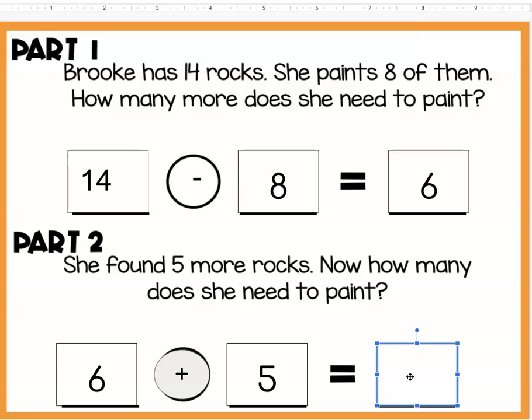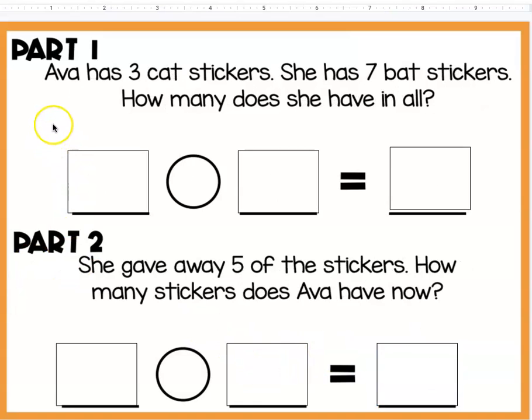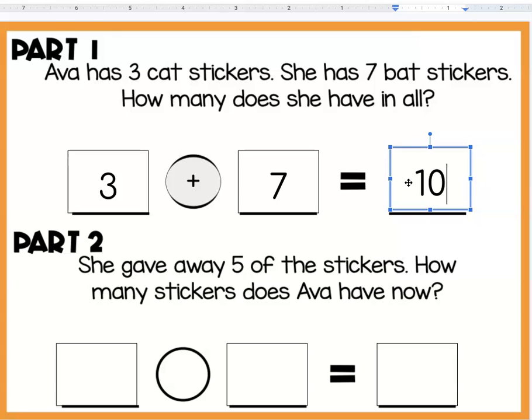Let's do one more. Ava has three cat stickers, so I'm starting with three. She has seven bat stickers. How many does she have in all? They're asking for all the stickers together. When you're combining, you're adding. So put the addition symbol there, seven for the bat stickers. Three fingers, when I put seven more fingers out I have a total of ten fingers.